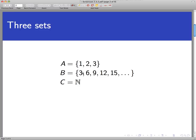B consists of the numbers 3, 6, 9, 12, 15, and so on. So other things that are in this set would include 18 and 21 and 24, all the positive integer multiples of 3. And then C is just the set of all natural numbers,